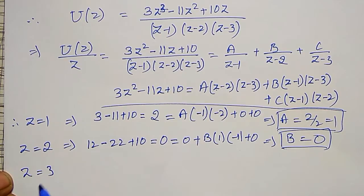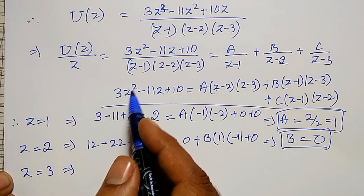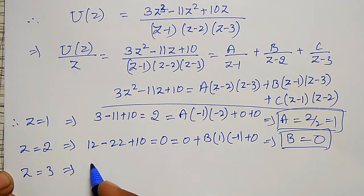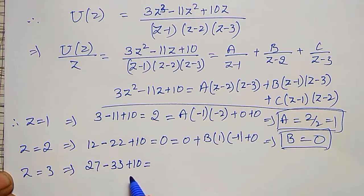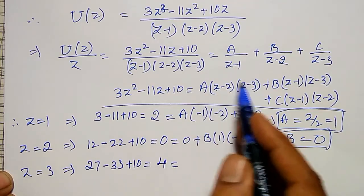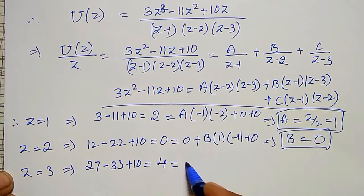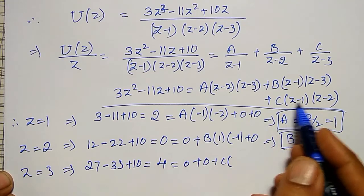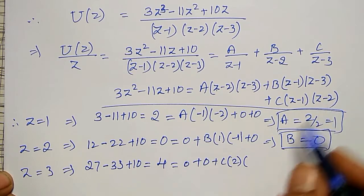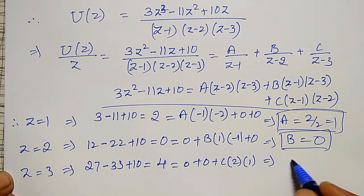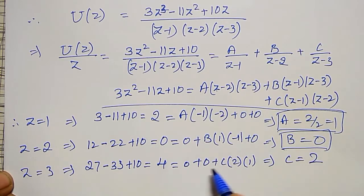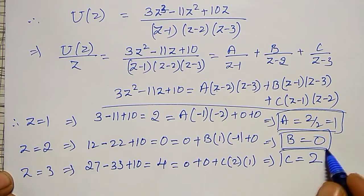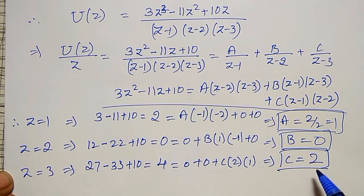At Z equal to 3, the left side gives 27 minus 33 plus 10 equal to 4. The right side gives C times (3 minus 1)(3 minus 2) equal to C times 2, so C equal to 4 divided by 2, which gives C equal to 2. Therefore A equal to 1, B equal to 0, C equal to 2.